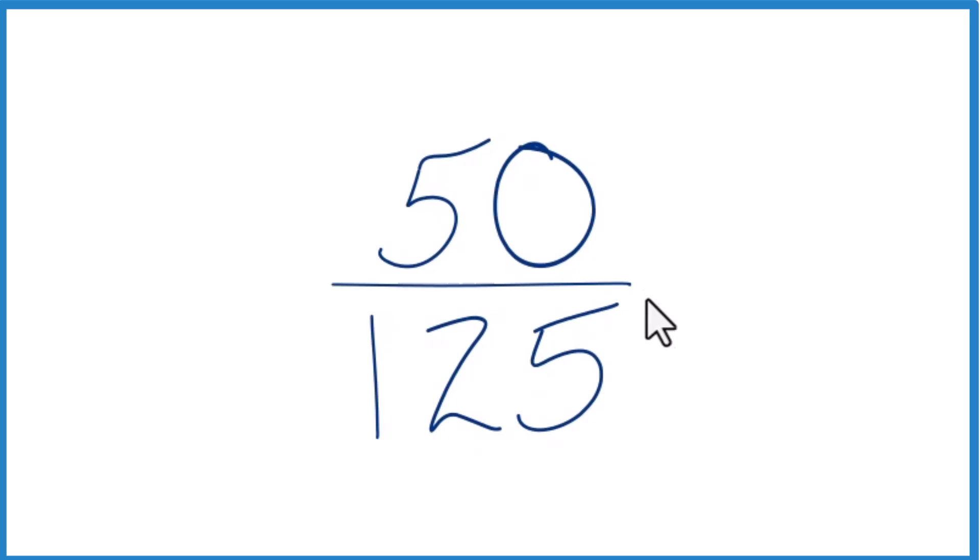So when I look at this, what I need to do is find a common factor, the greatest common factor that goes into both 50 and 125 evenly. I know that 25 would go into 50 and 125.